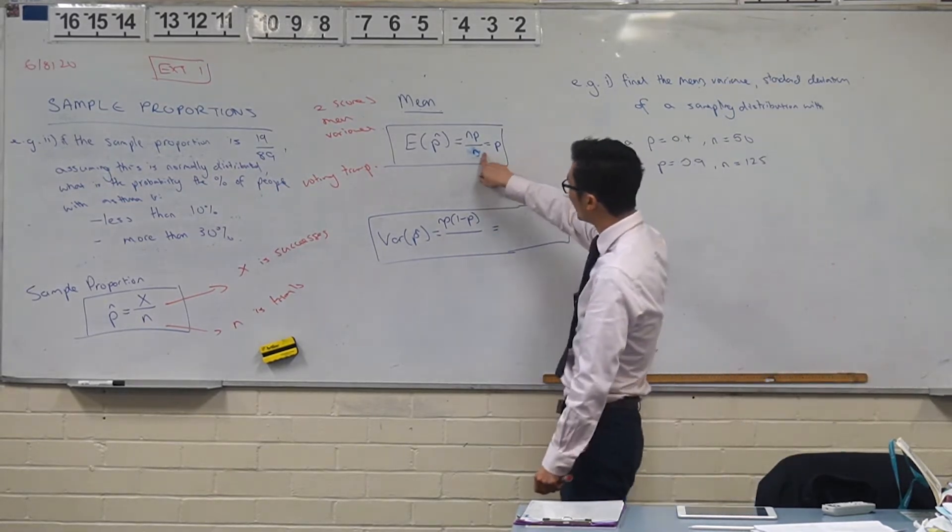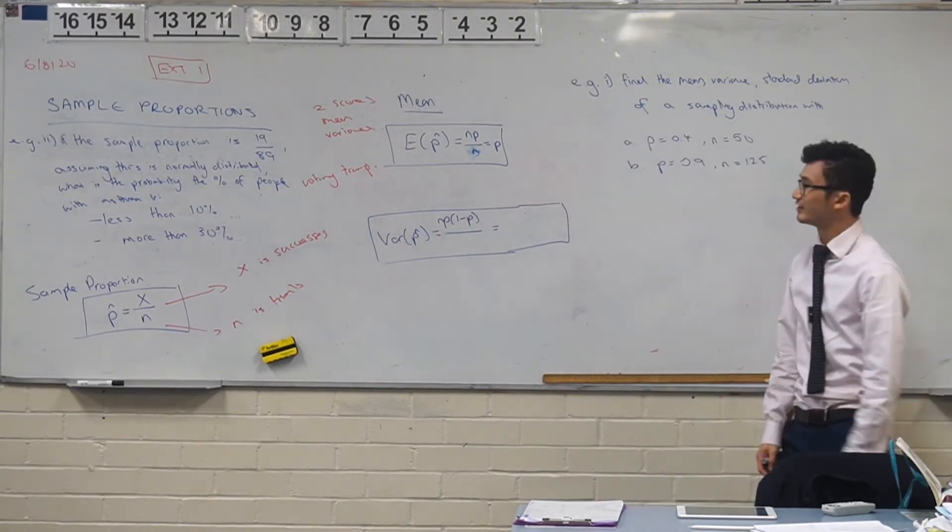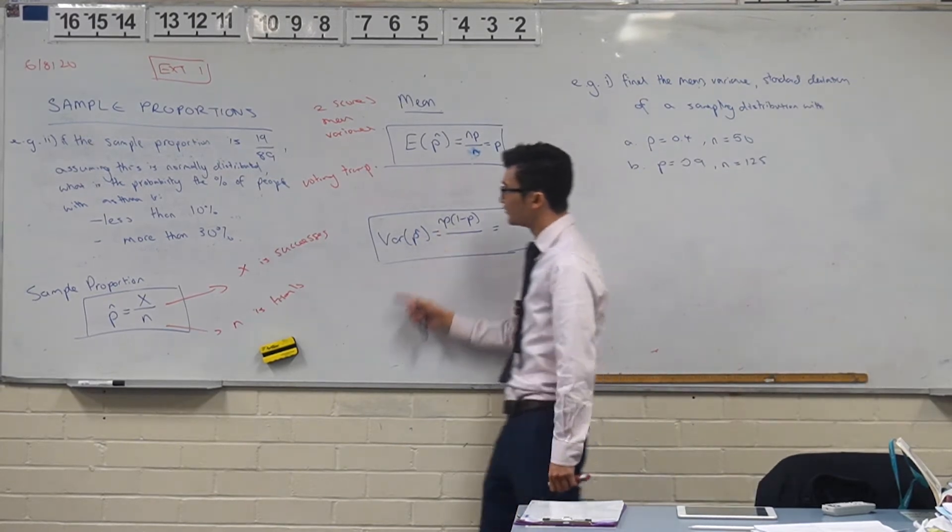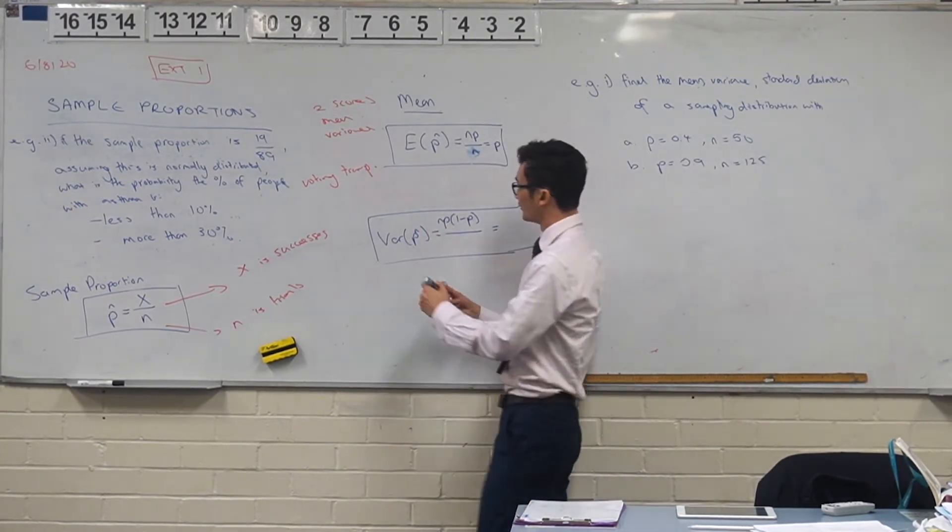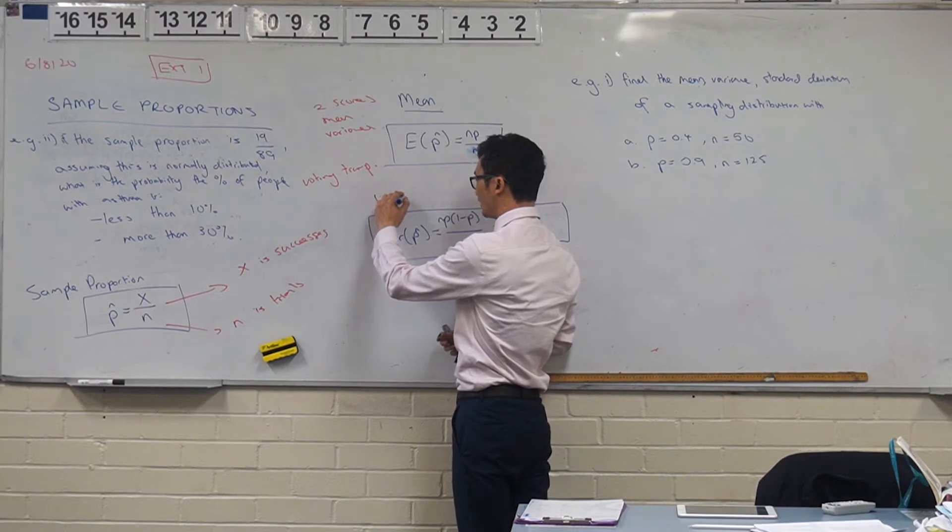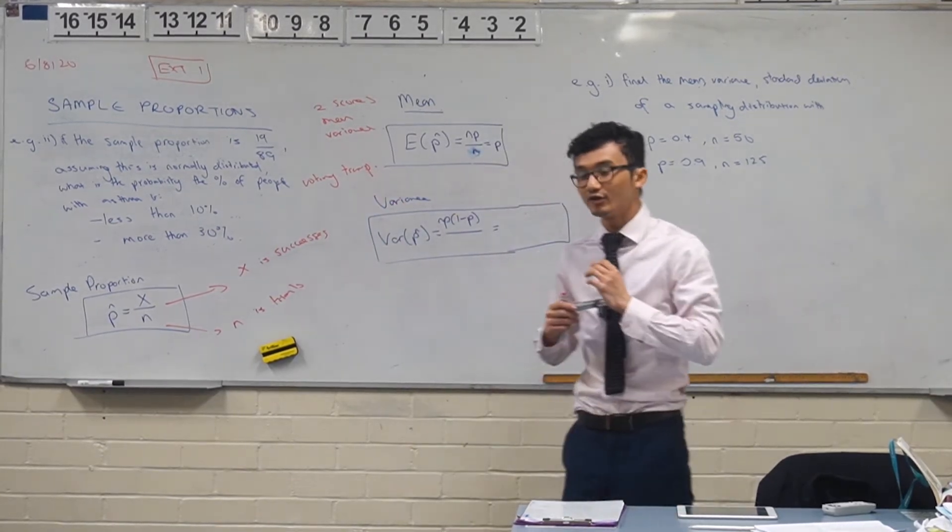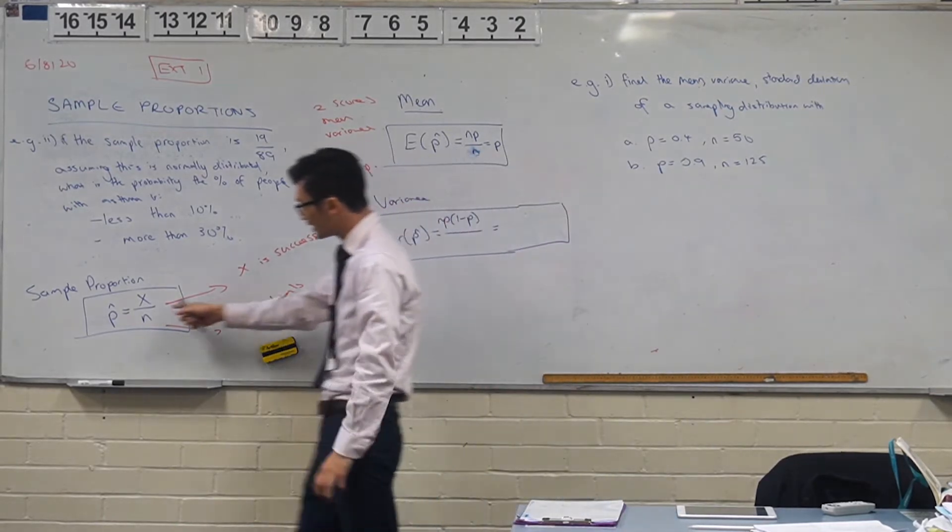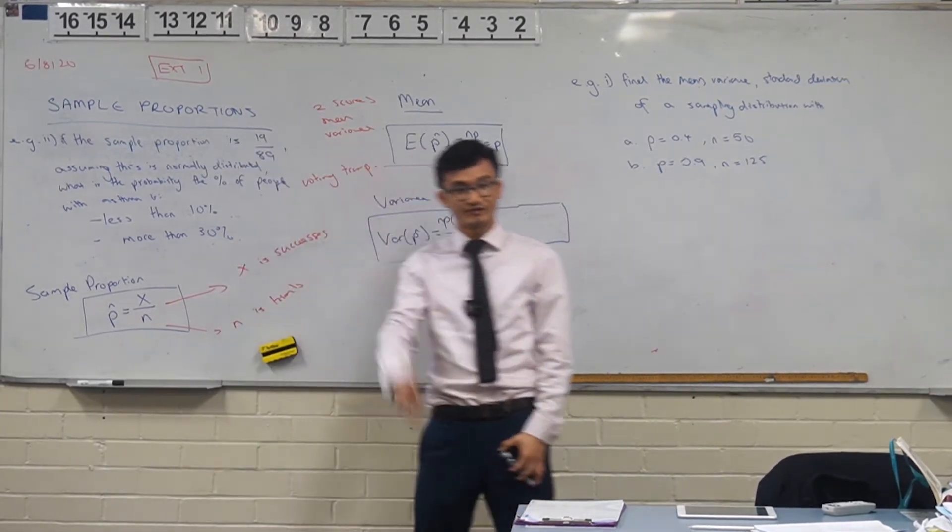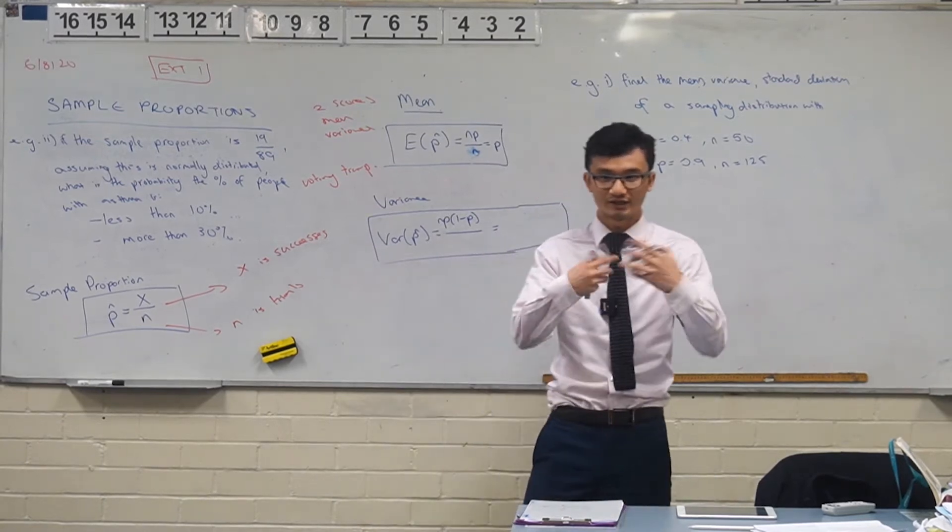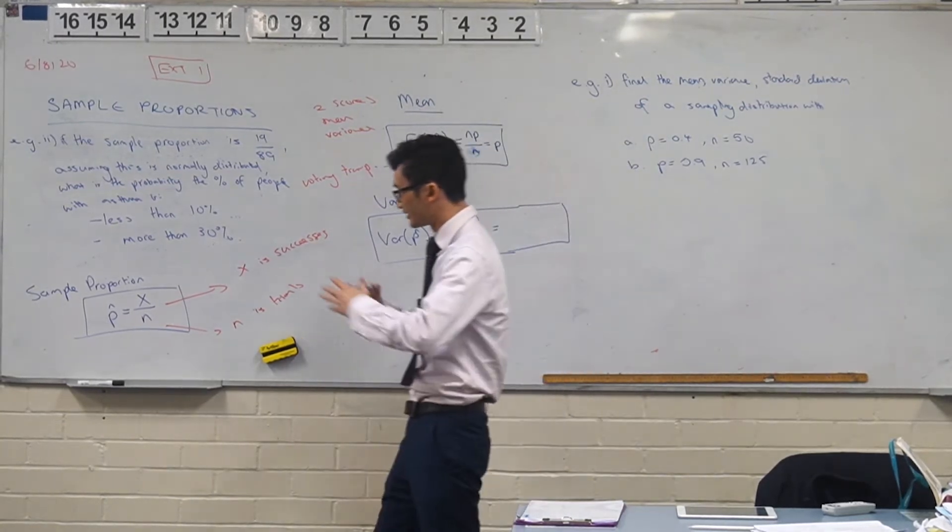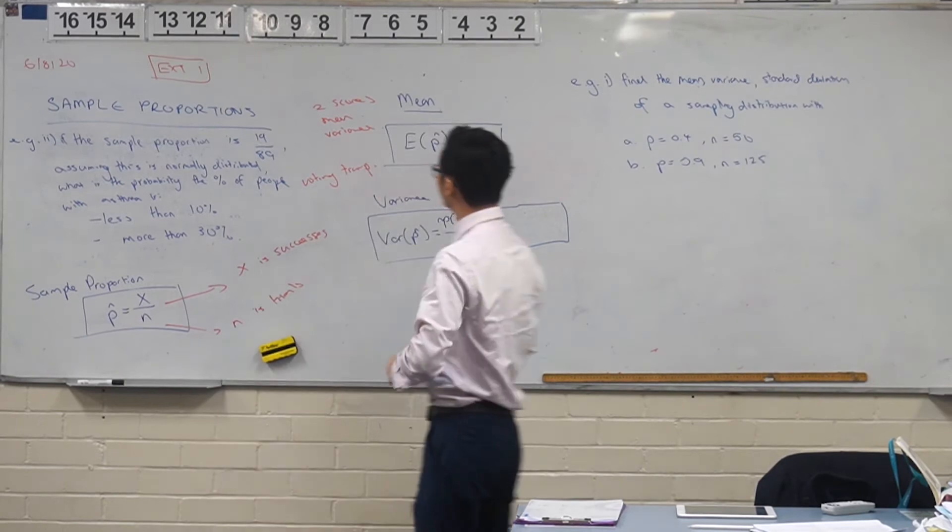So what I want to look at is that the expected value and variance is something that we can also find. Now the expected value and variance, we have those formulas for the binomial distribution, and we're going to do a similar thing. But the idea is because we're taking a sample, we have to divide by n. We have to divide by the number of trials that we are conducting, because that's how we define the sample proportion.